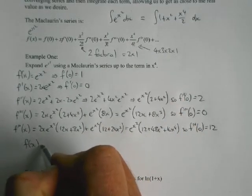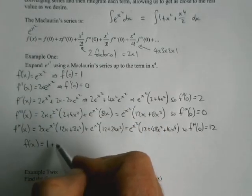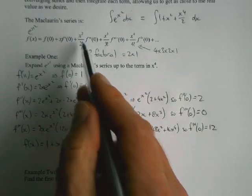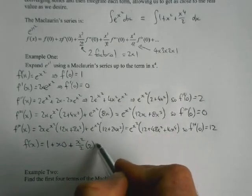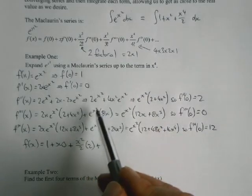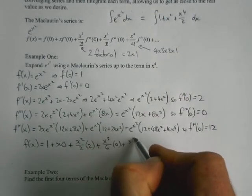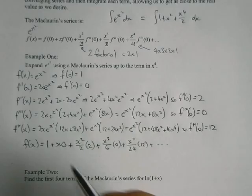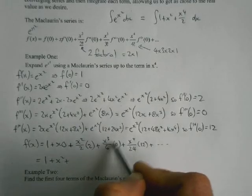In this case, it's only every second one that actually has a value. But now I can stick it all back into my expression here. So f of x equals f of 0, which was 1, plus x times f dash of 0, which was 0, plus x squared over 2 factorial, so that's just x squared over 2, times the second derivative value, which was 2, plus x cubed over 3 factorial, which is 6, times the third derivative of 0, which was 0, plus x to the power of 4 over 4 factorial, which is 24, times the fourth derivative value, which was 12, plus dot dot dot.